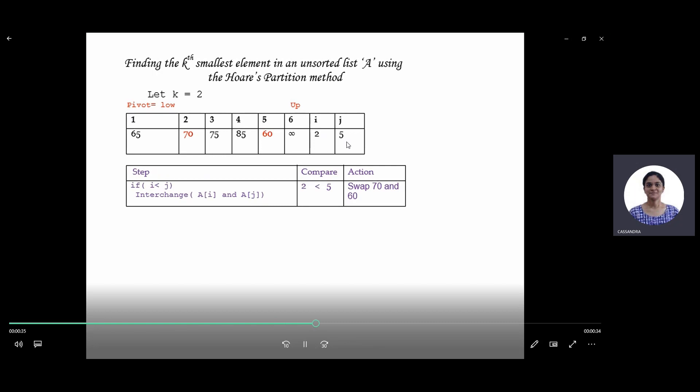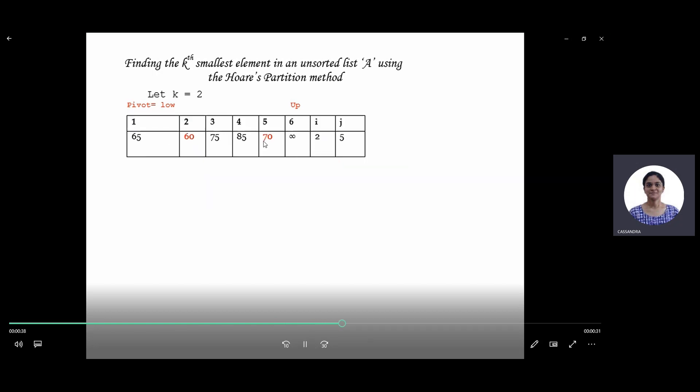Now the value of 2 is less than 5, so we swap the values at i and j, which is shown in red here. The swap is accomplished.